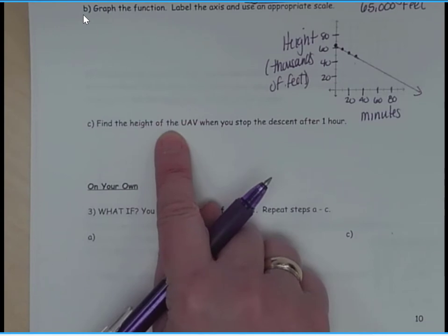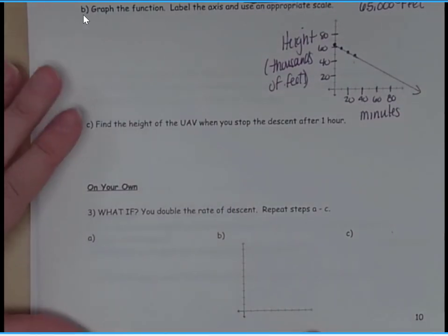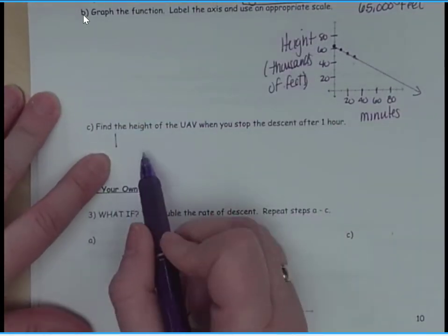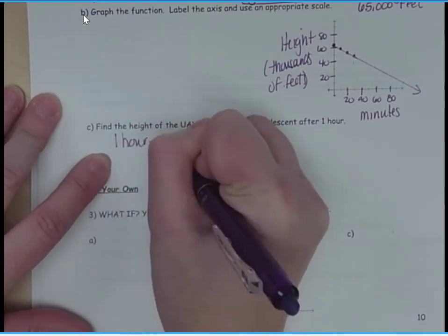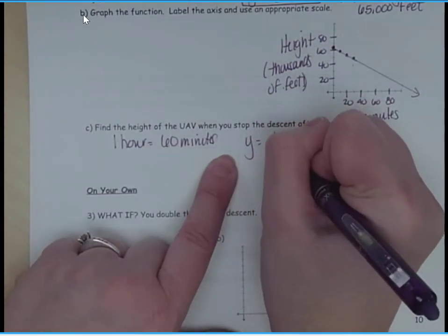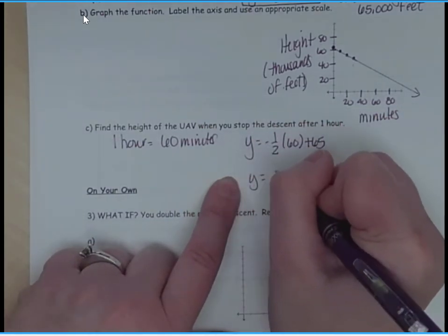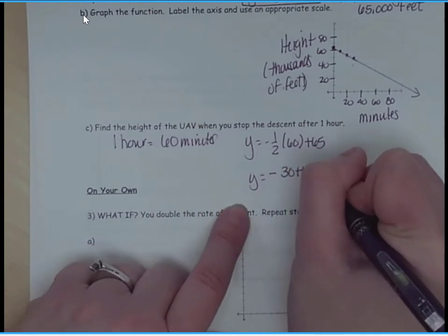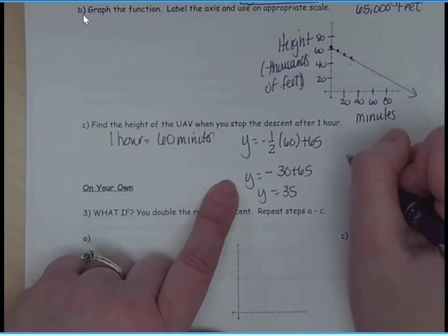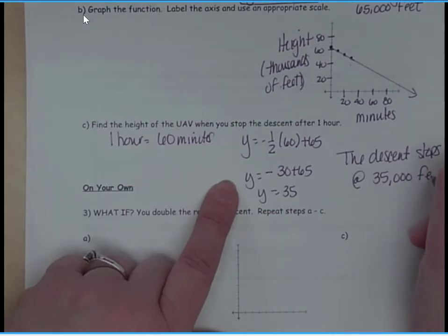So now, find the height of the UAV when you stop the descent after one hour. So I replace x with 1. No x is in minutes. So y equals negative 1 half, 60, plus 65. Y equals negative 30, plus 65. Y equals 35. So that means the descent stops at 35,000 feet.